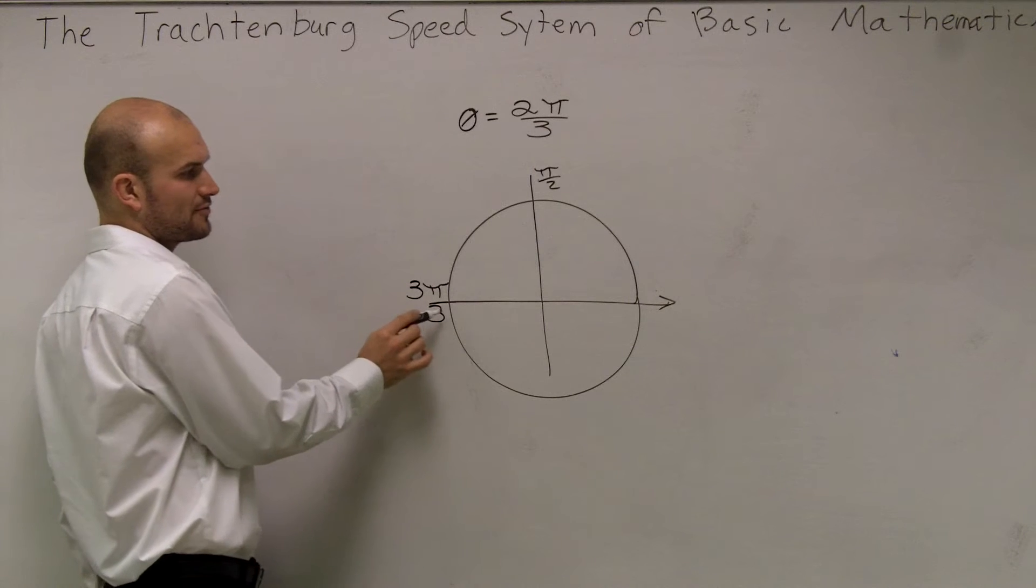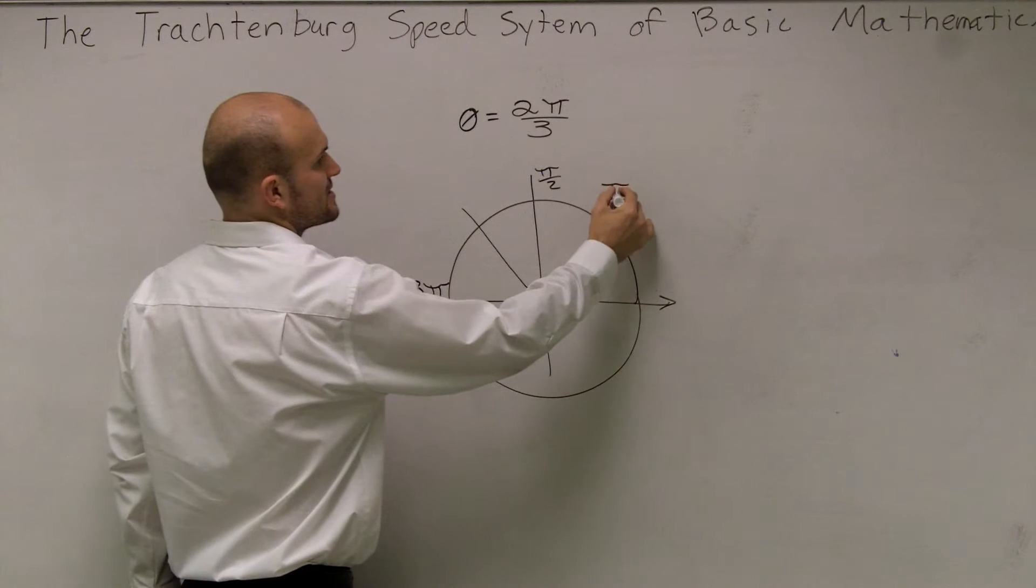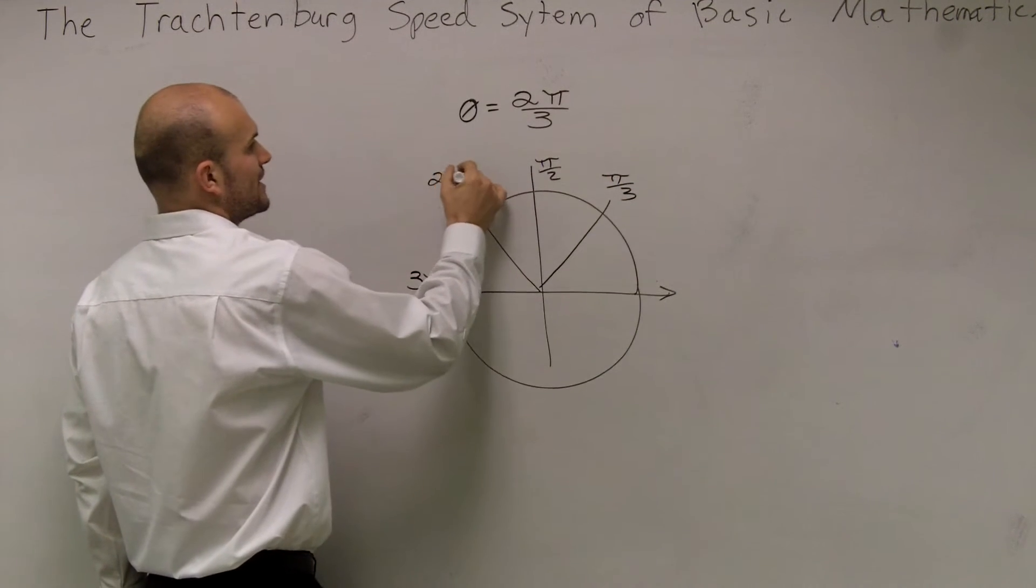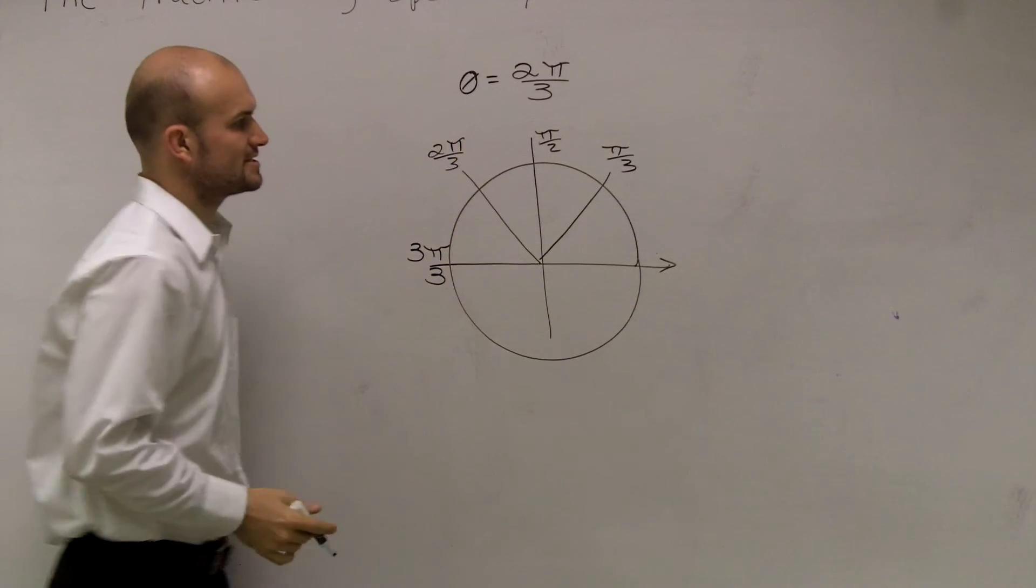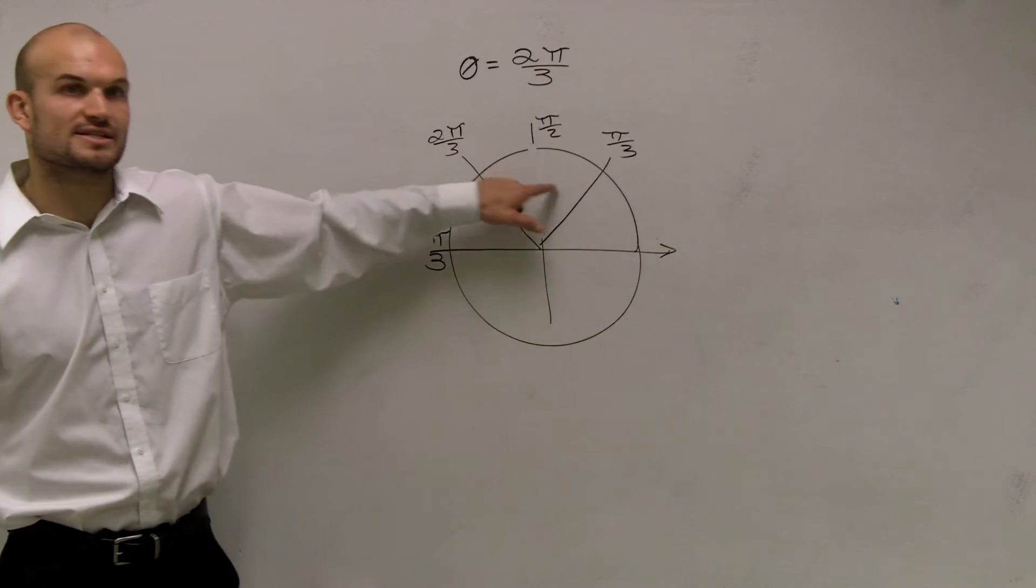So if this is π, 3 over 3, then this could be 2π, 1π. So I can say this is π over 3. This would be 2π over 3. You guys see what I did is I now cut this into thirds.